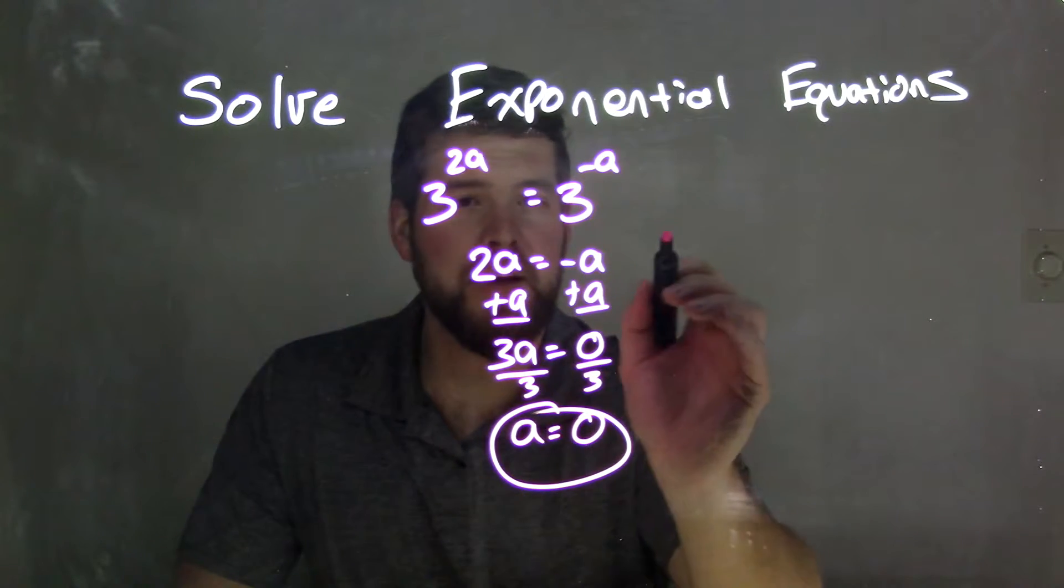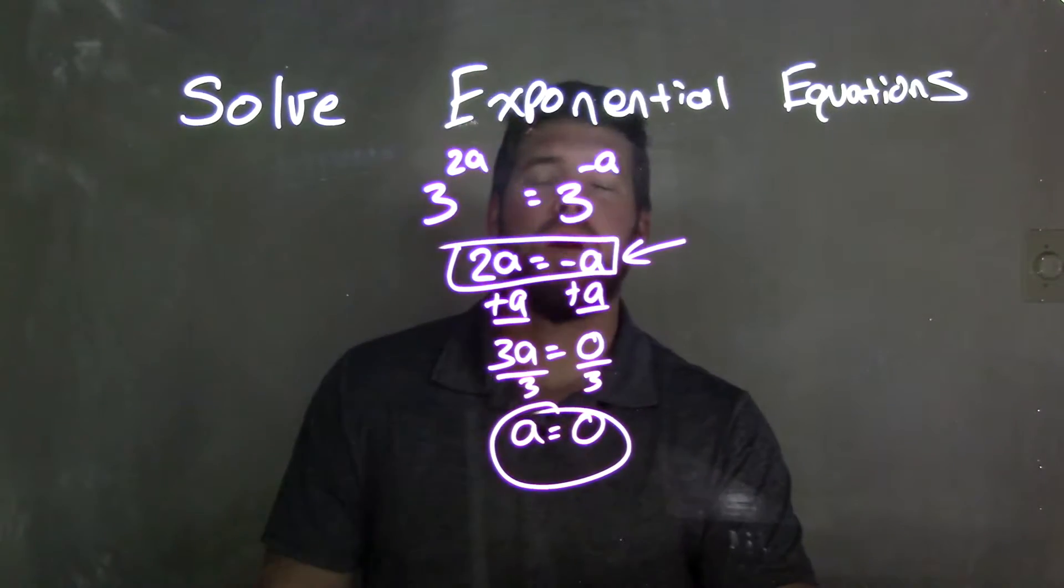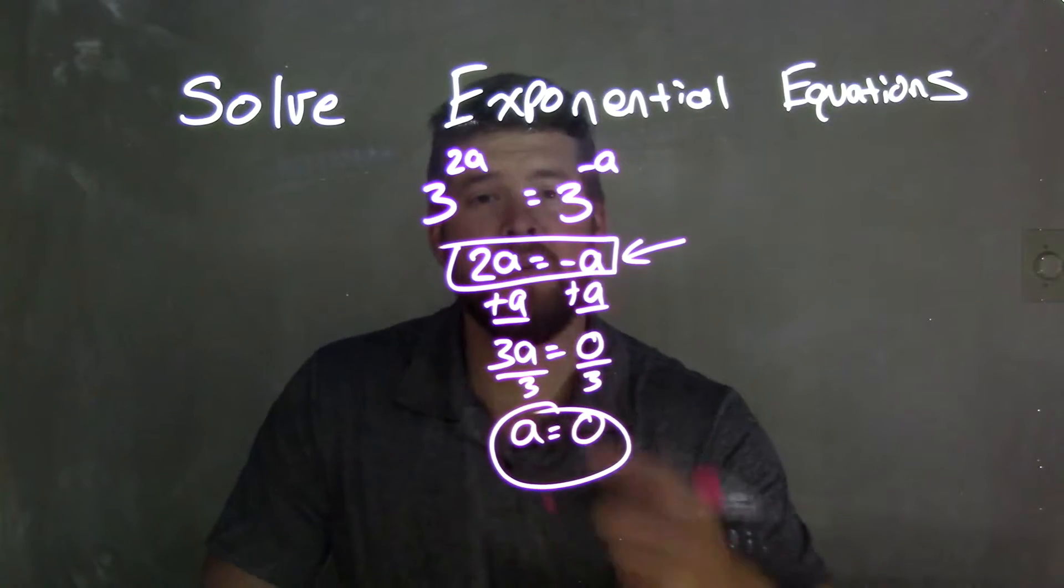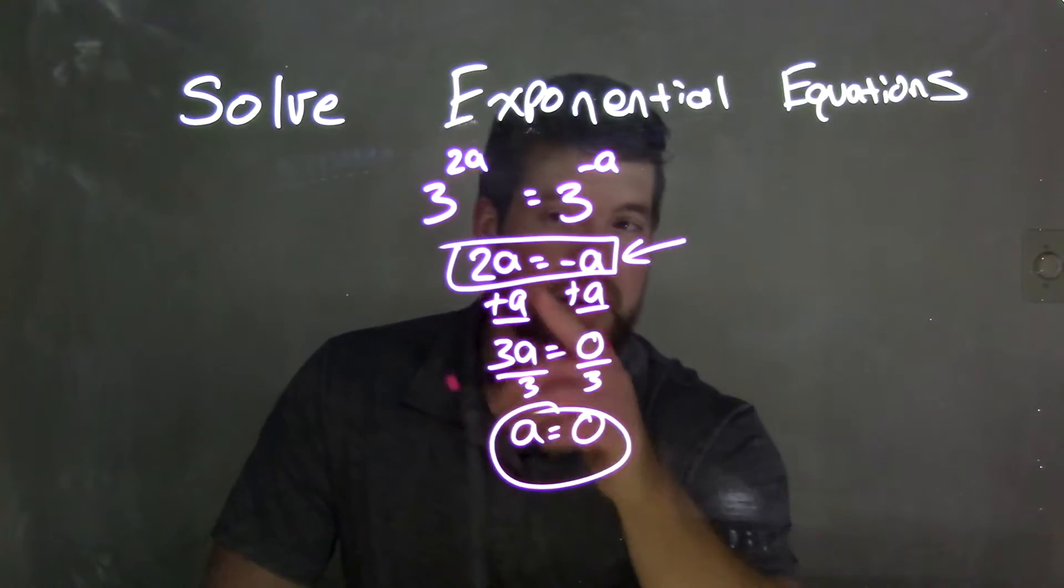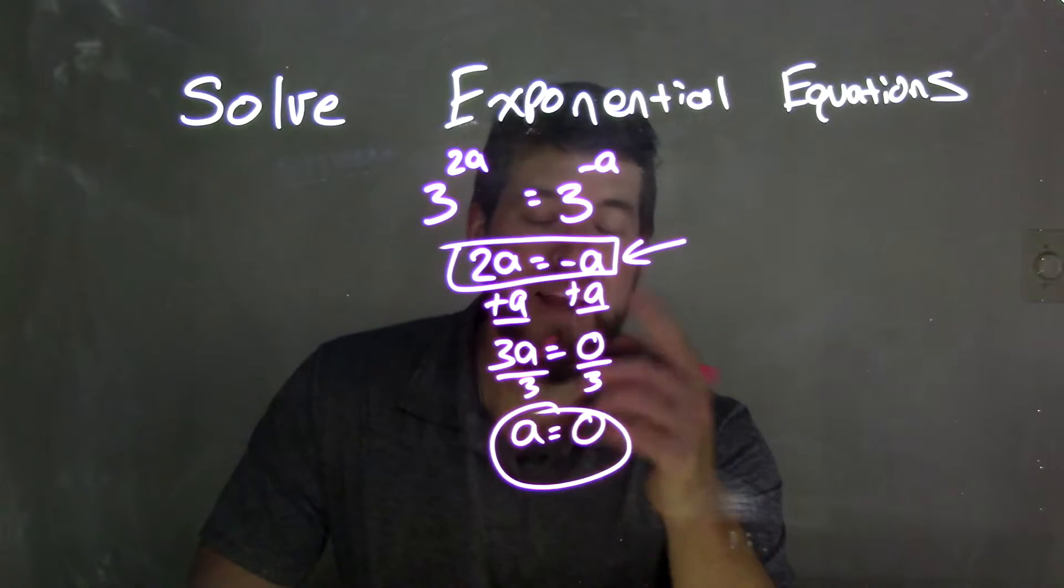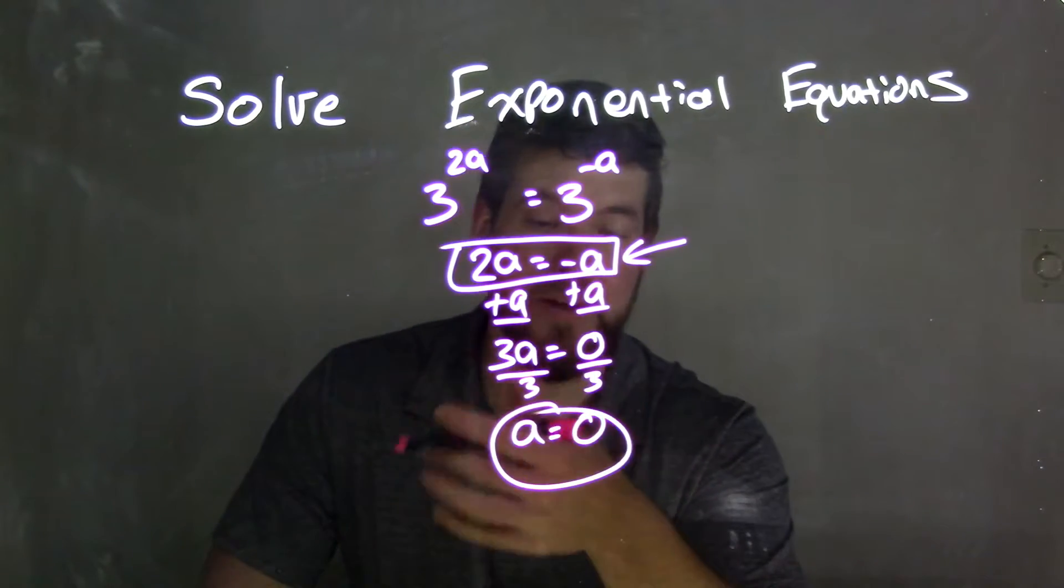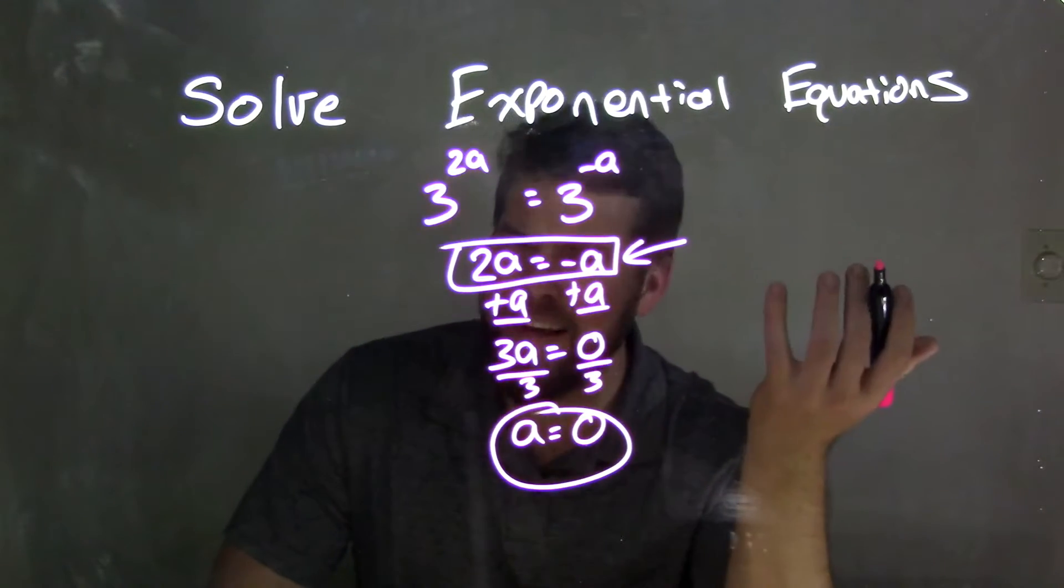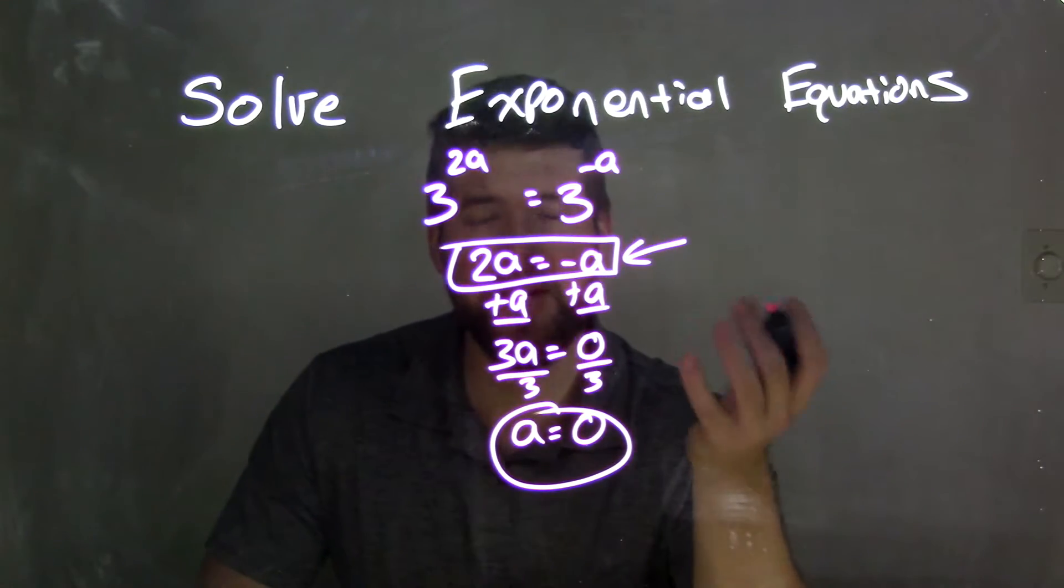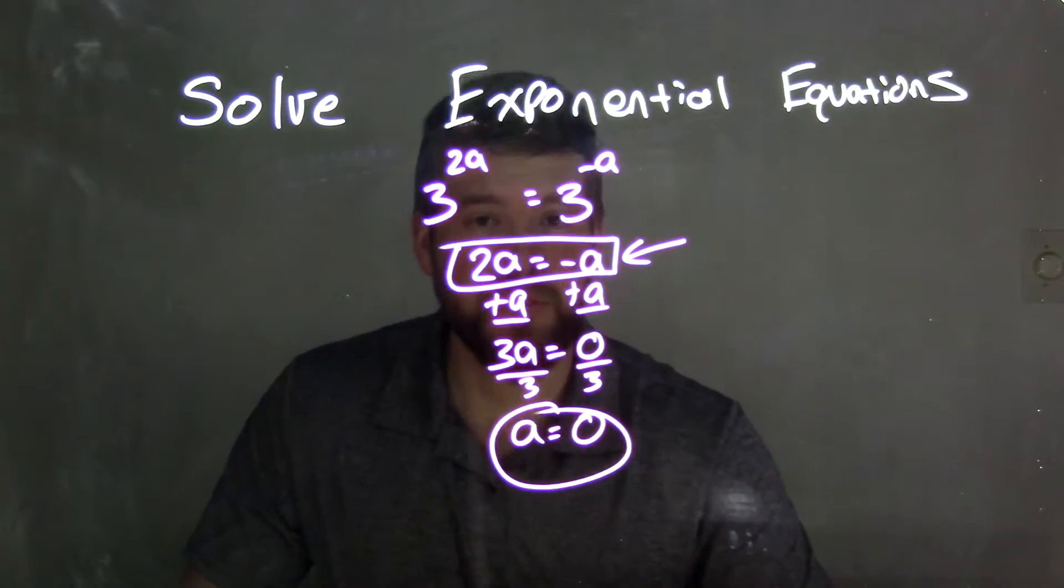Now if we look back at this point right here, one of the ways you can also think about this problem is what number can we put in for a where two times that number is equal to the negative of that number. And the only number that does work is 0. Because 2 times 0 is 0 as well as negative 0, which really doesn't happen, is just 0. So we would have 0 equals 0 and that would be a true statement.